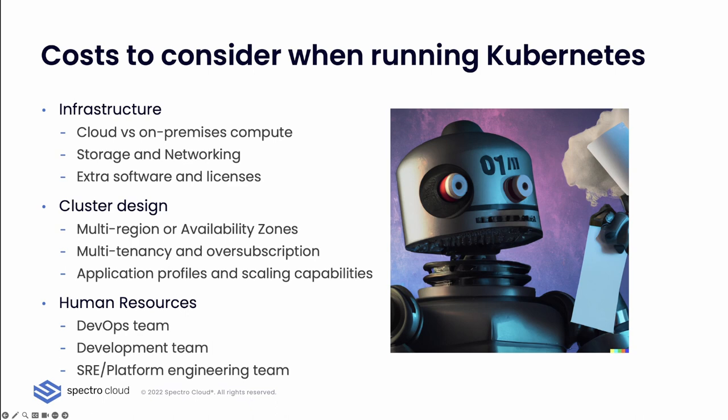There are also storage and networking costs to consider, which will vary depending on whether you're running on-premises or in the cloud. And then finally, for the infrastructure, you have to factor in extra software and licenses — especially if you're running on-premises, things like virtualization management software for the hardware — all of which may come in addition to your bill.